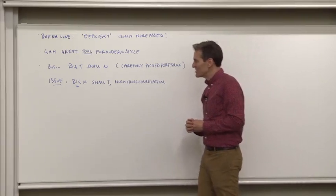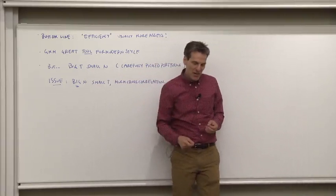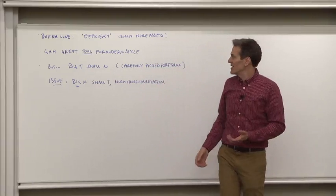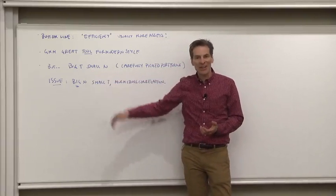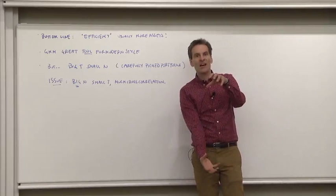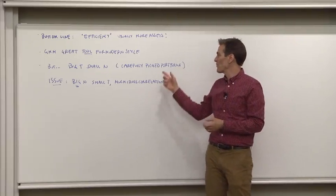However, let me suggest a research topic. What we're doing in GMM and all of asset pricing is what we call big T small n econometrics. The presumption is that we have a long time period compared to the number of portfolios.